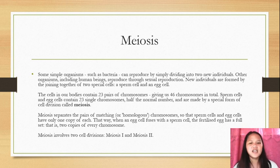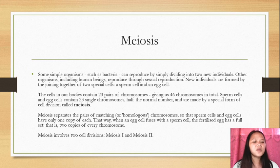The cells in our bodies contain 23 pairs of chromosomes, giving us 46 chromosomes in total. Sperm cells and egg cells contain 23 single chromosomes, half the normal number, and are made by a special form of cell division called meiosis.